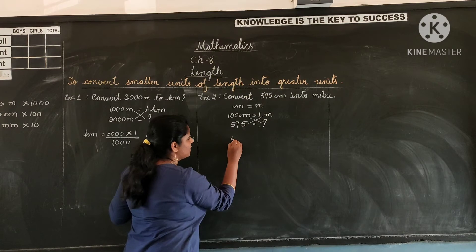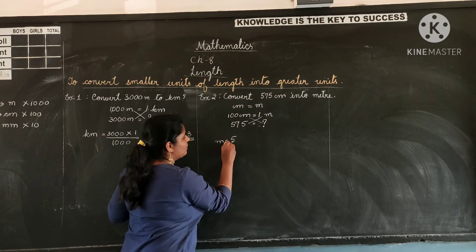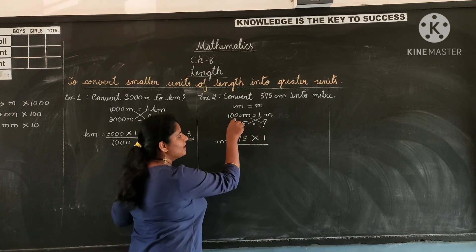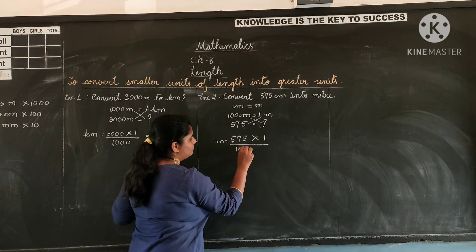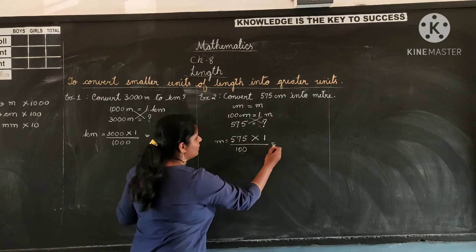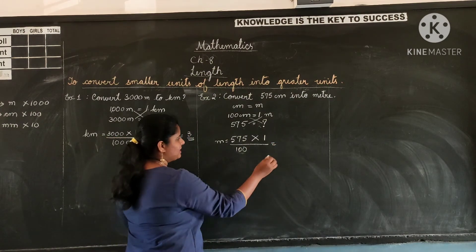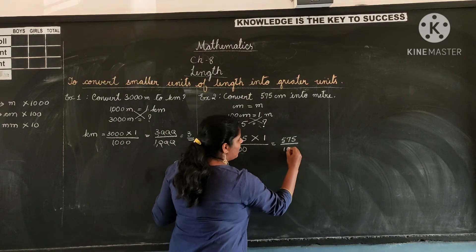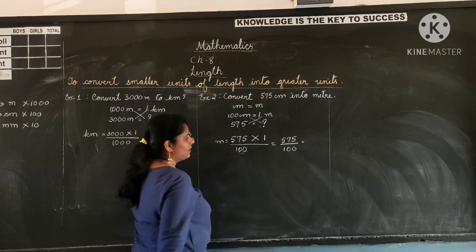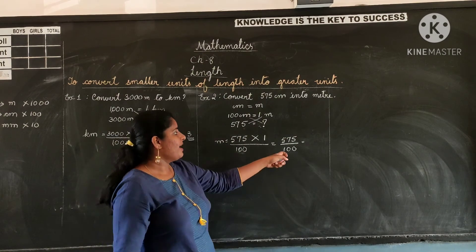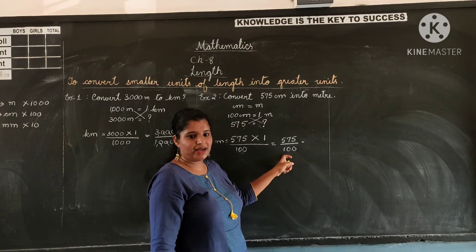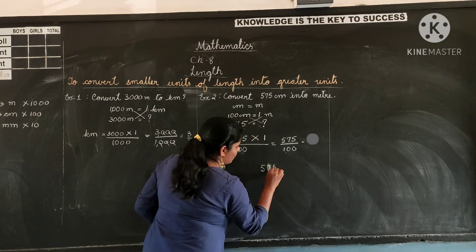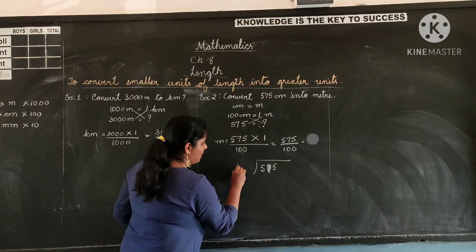Multiply the numbers first. Meter is equal to 575 into 1 divided by 100. Which means, we need to calculate 575 divided by 100.